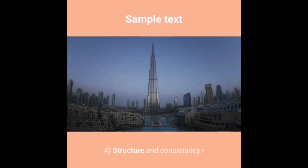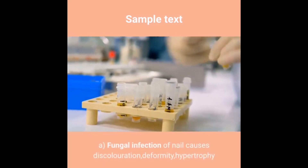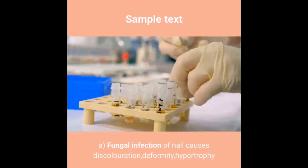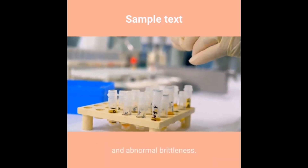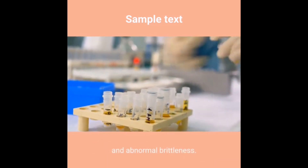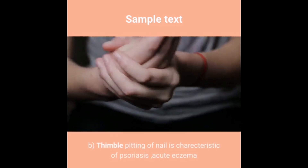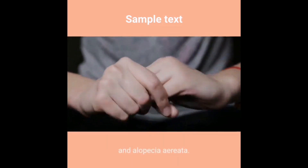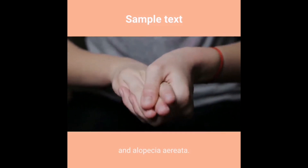Structure and consistency: A) Fungal infection of the nail causes discoloration, deformity, hypertrophy and abnormal brittleness. B) Thimble pitting of the nail is characteristic of psoriasis, acute eczema and alopecia areata.